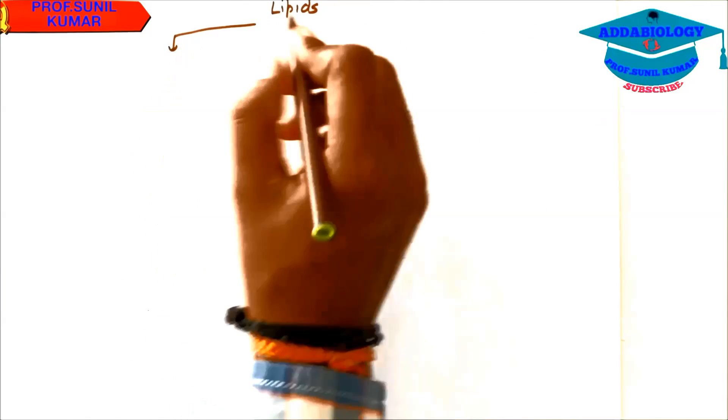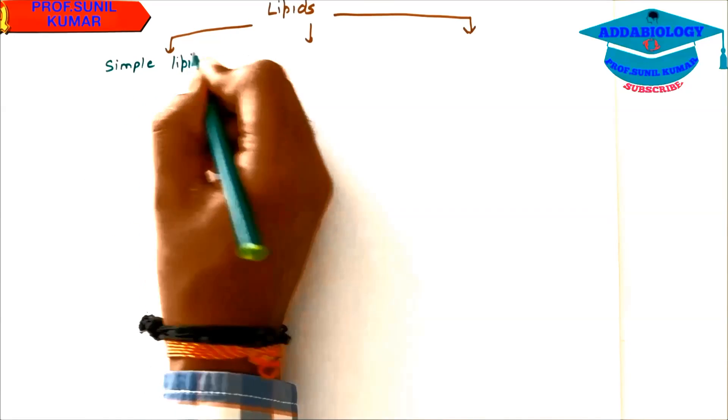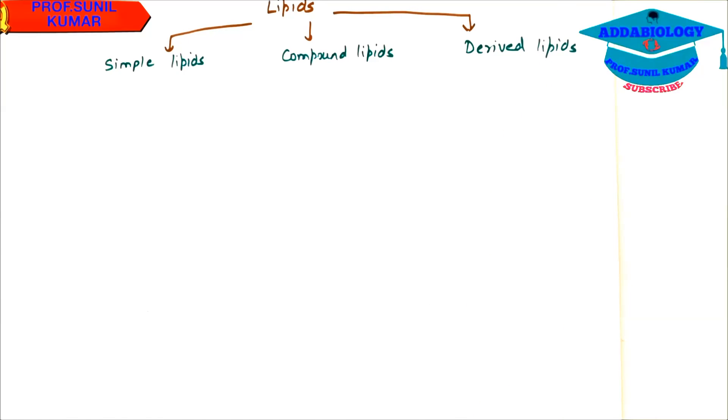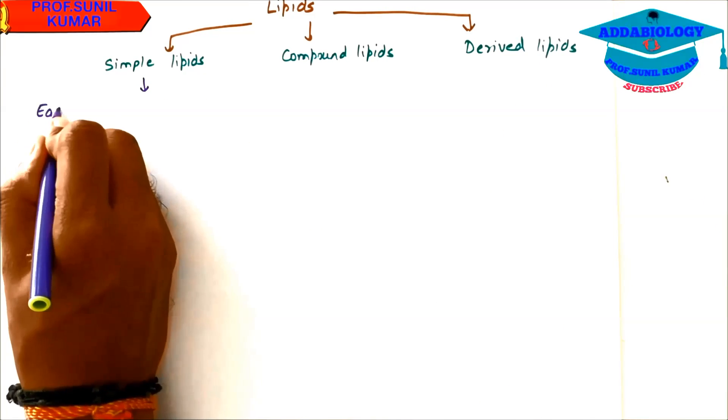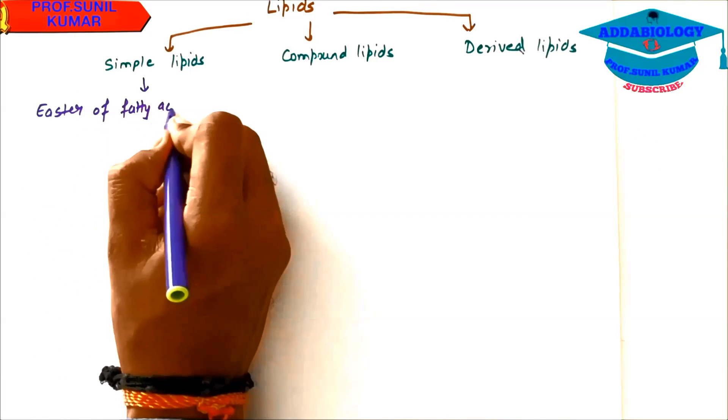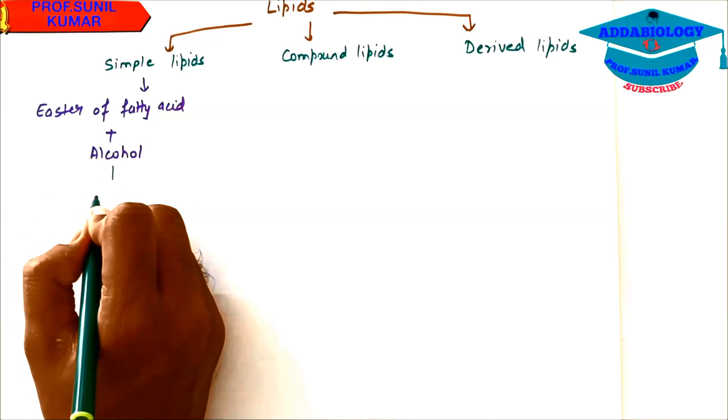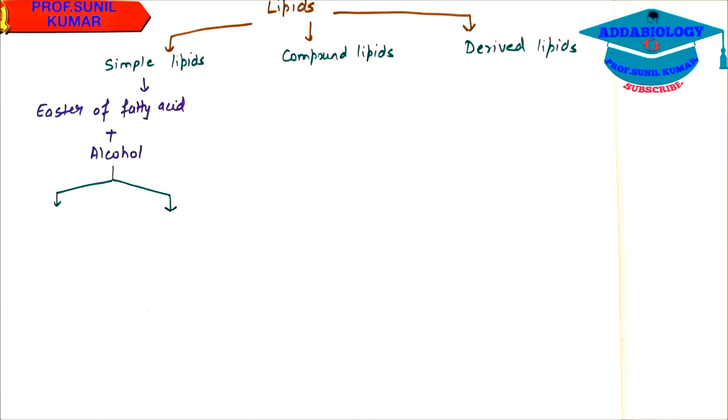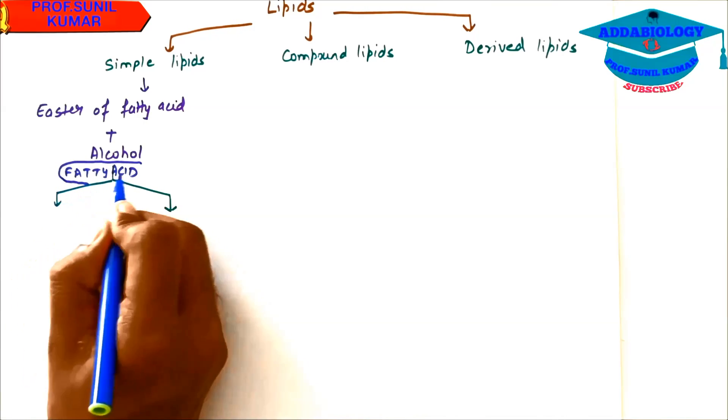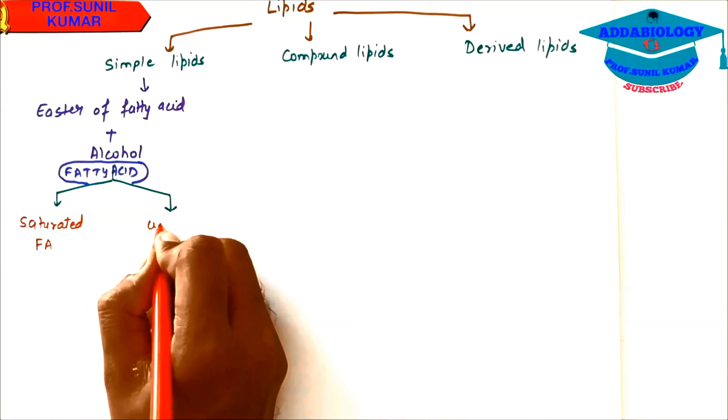Whenever we try to classify lipids, lipids are classified as simple lipids, compound lipids, and derived lipids. What are simple lipids? Basically, these are esters of fatty acid plus alcohol. Whenever we talk about fatty acid in simple lipids, there are two types of fatty acids: saturated fatty acids and unsaturated fatty acid.